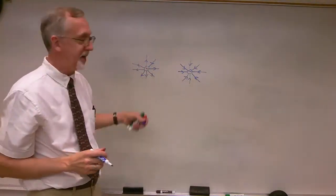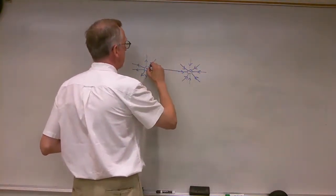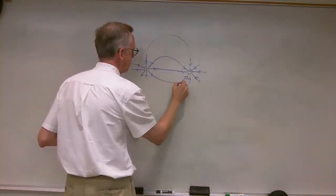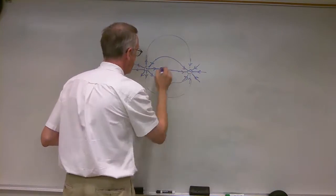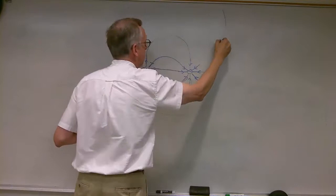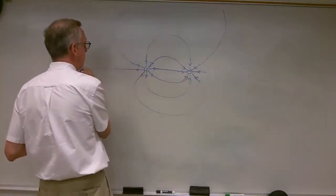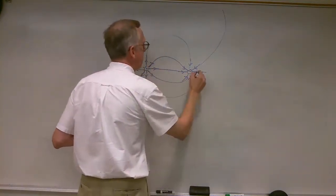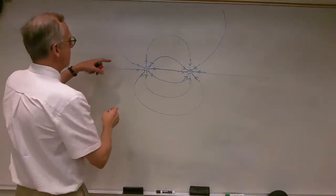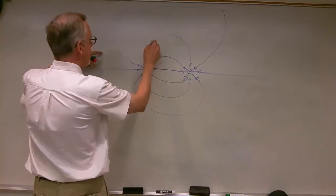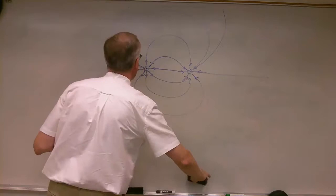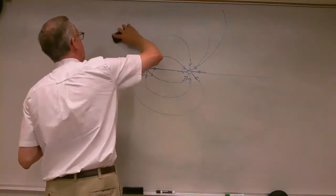Now we just connect up the lines — drawing this one across here, this one like this, this one like this, here, here, here. And then this one is going to go out to infinity, and this one is going to come in from infinity. There we go — not quite symmetric, but something like that.